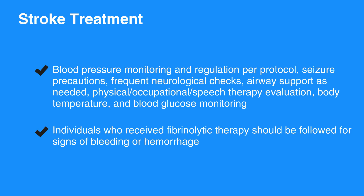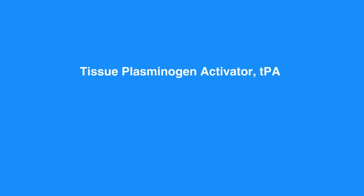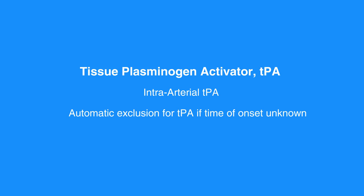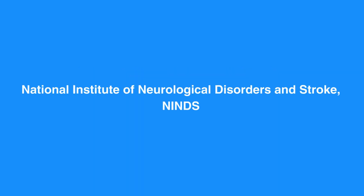Certain individuals aged 18 to 79 years with mild to moderate stroke may be able to receive TPA, or tissue plasminogen activator, up to 4.5 hours after symptom onset. Under certain circumstances, intra-arterial TPA is possible up to 6 hours after symptom onset. When the time of symptom onset is unknown, it is considered an automatic exclusion for TPA. If time of symptom onset is known, the National Institute of Neurological Disorders and Stroke, or NINDS, has established time goals.